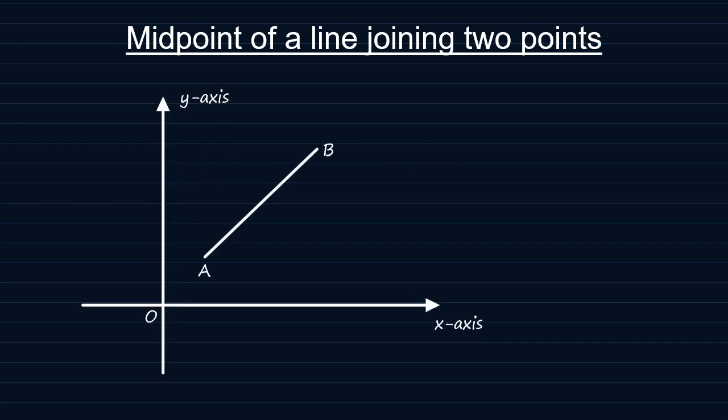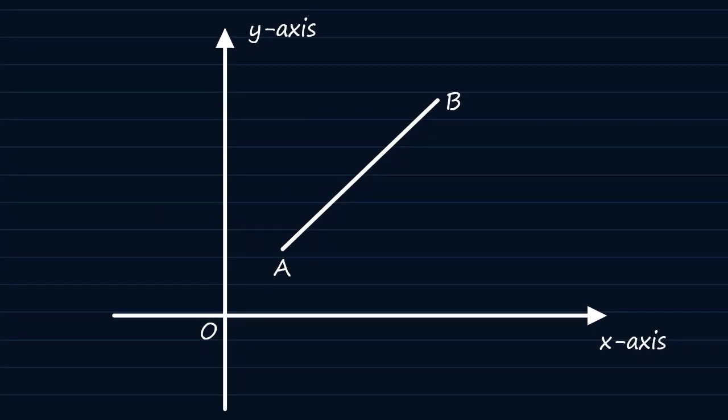Now we have the line AB here, where A and B are the endpoints of the line. Let's call the midpoint of AB M.